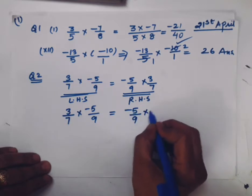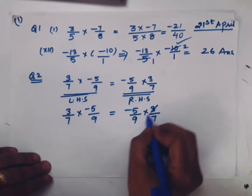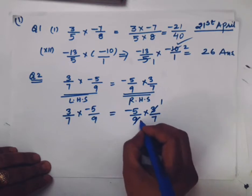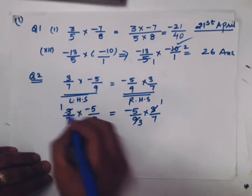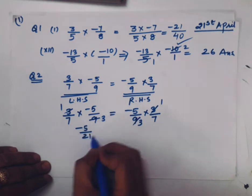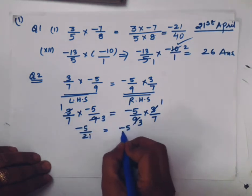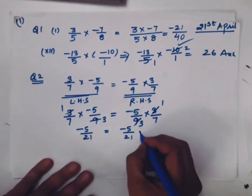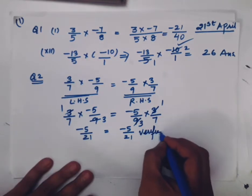This is the commutative property. 3/7 × -5/9 = -5/9 × 3/7. This will cancel on 3's table. So answer is -5/21 = -5/21. RHS and LHS are equal. Answer is verified.